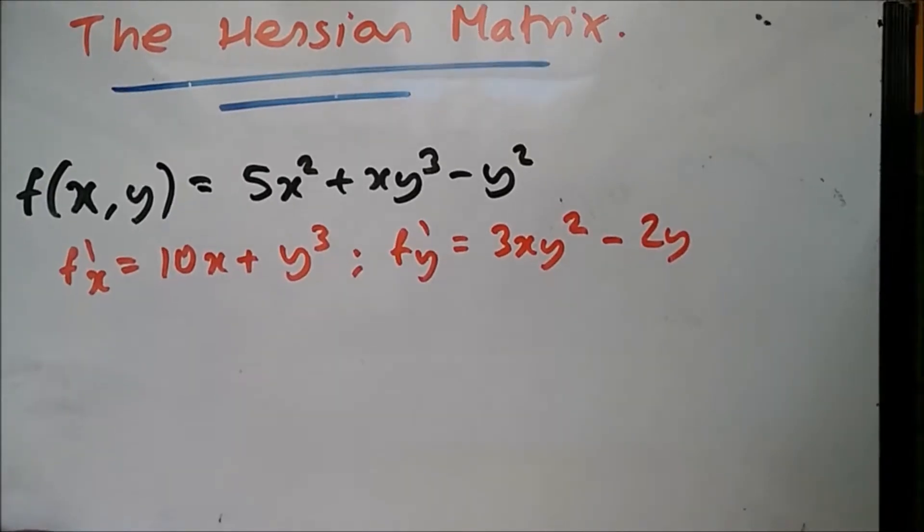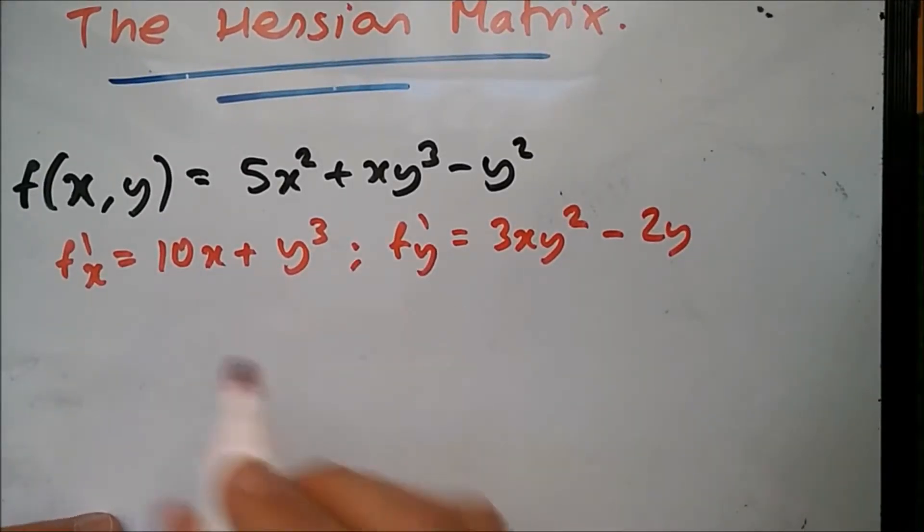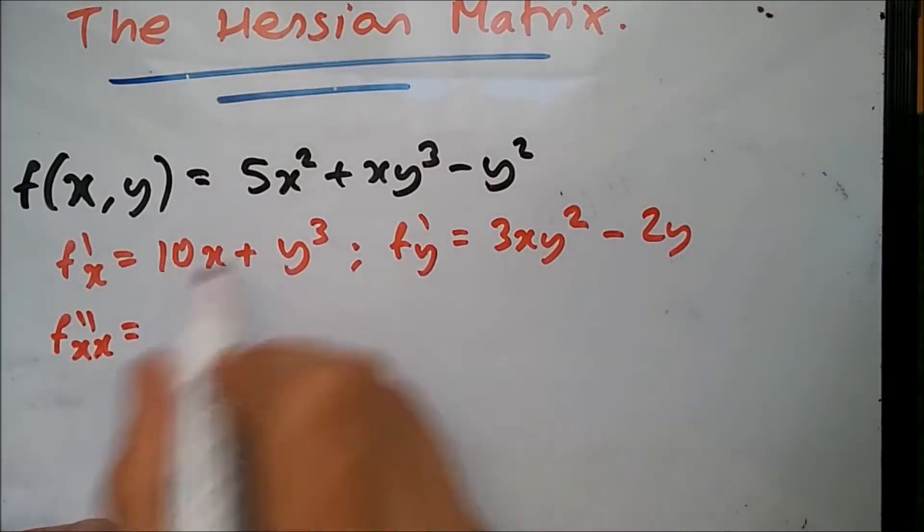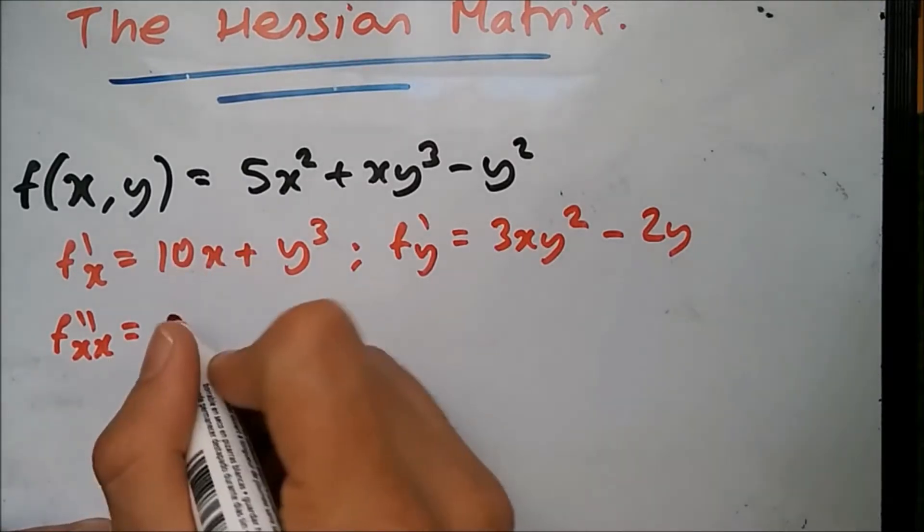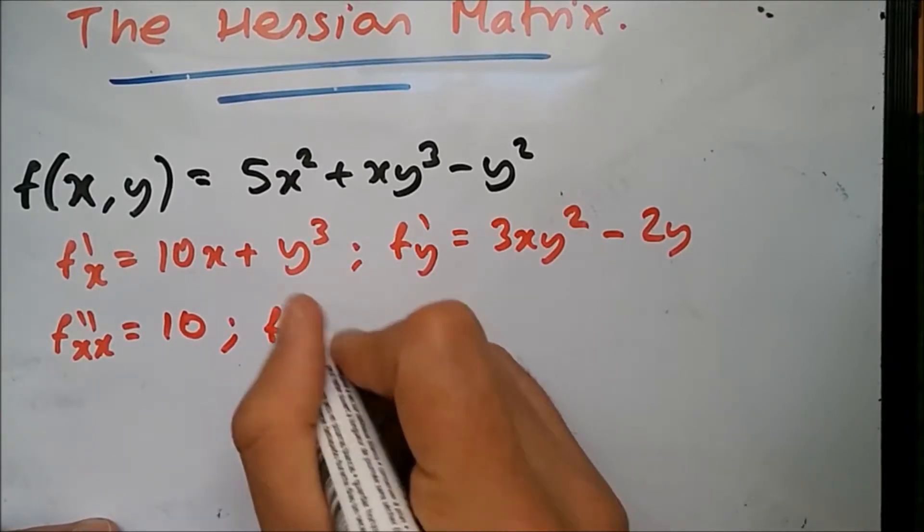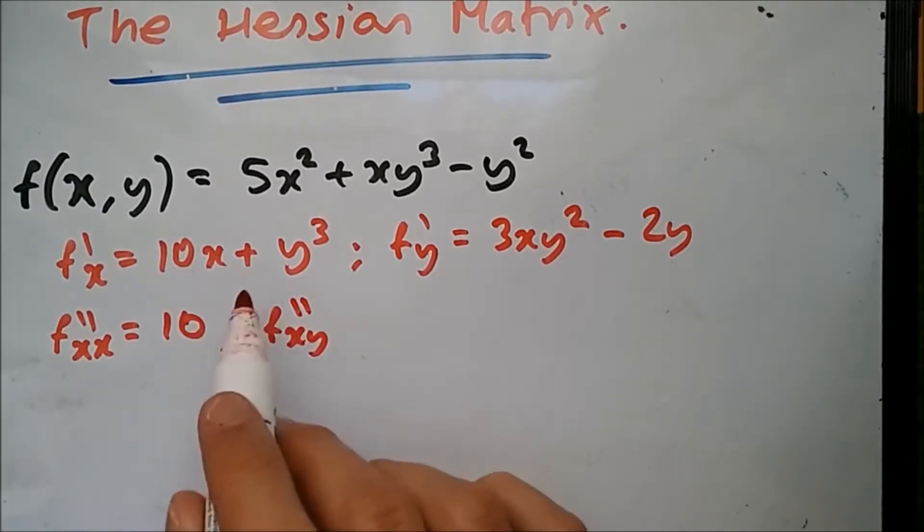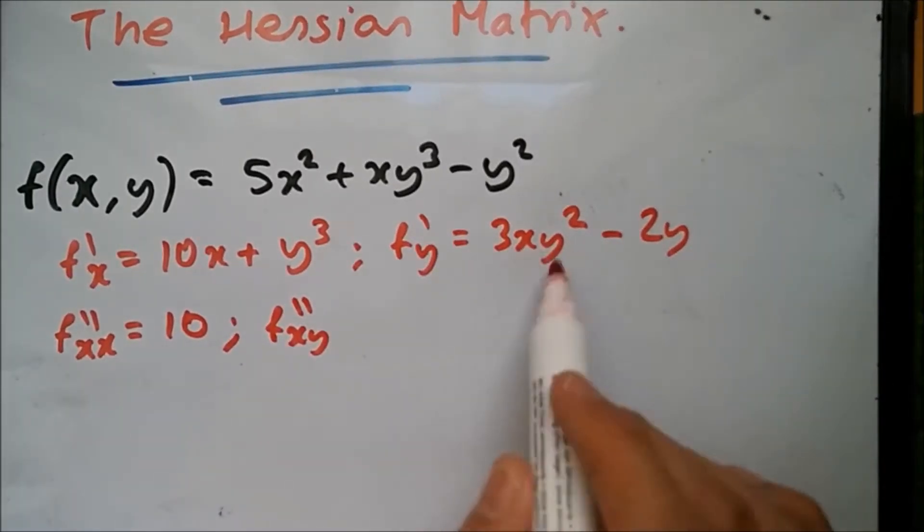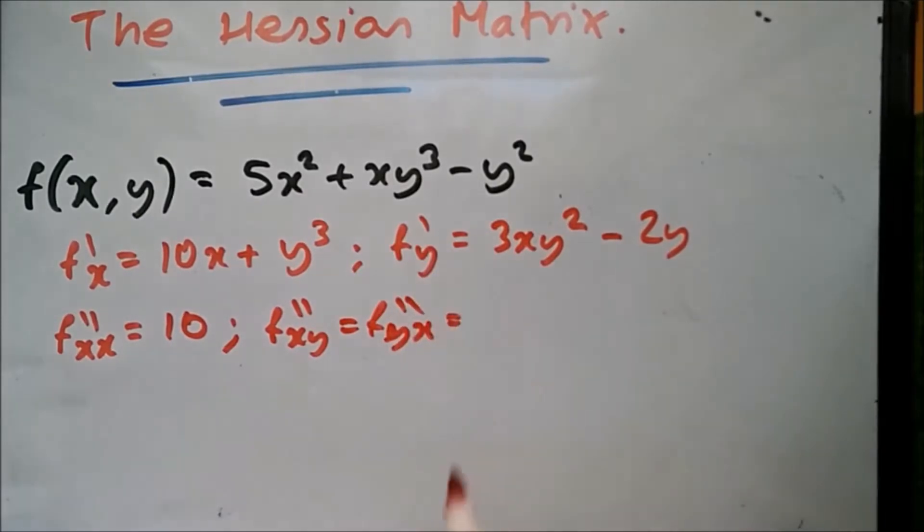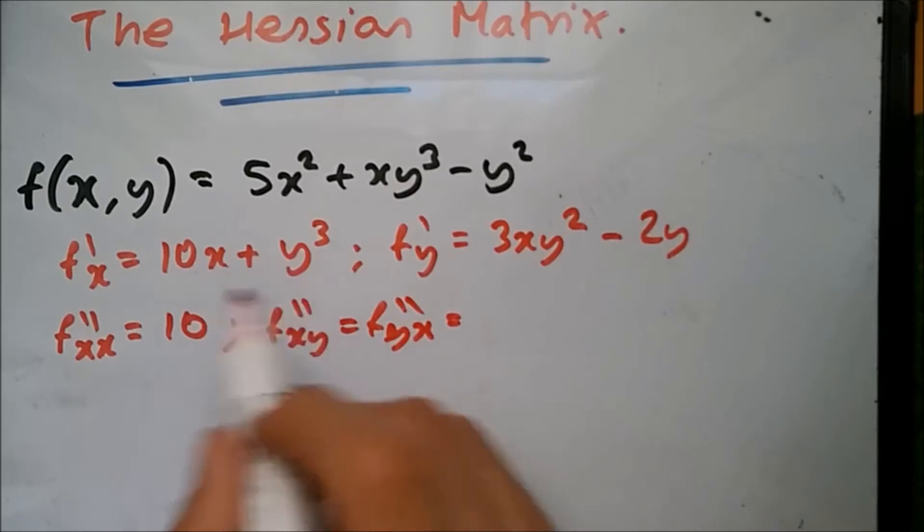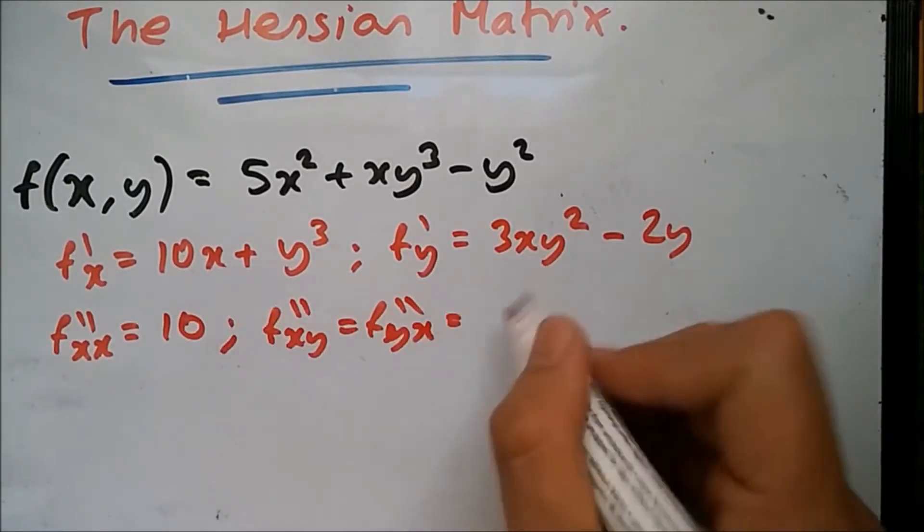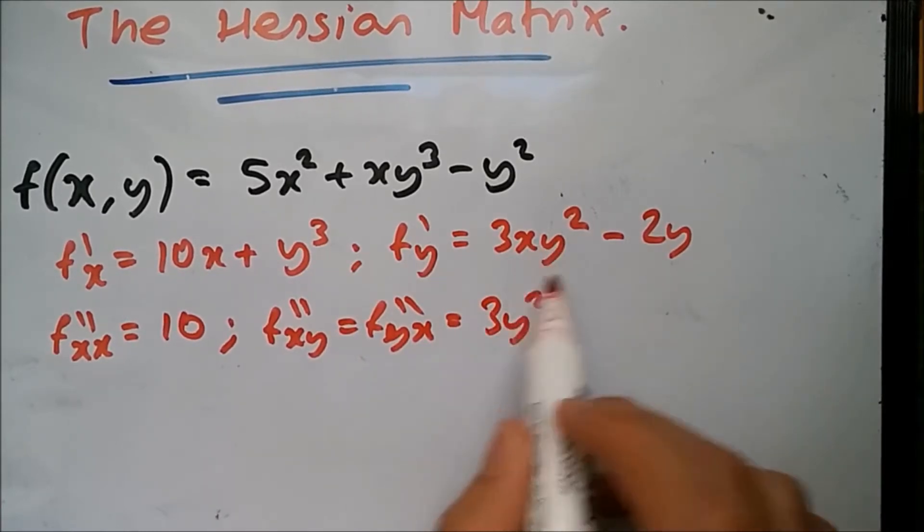Now we need to compute the second partial derivatives of each one. So we're gonna have fxx. Differentiating with respect to X, this is the only one we can differentiate, so we get 10. Now differentiating fxy - the first derivative with respect to Y is the same as the first derivative with respect to X then Y, fyx, since they both give the same result. When we do the first derivative with respect to Y, we're gonna get 3y².